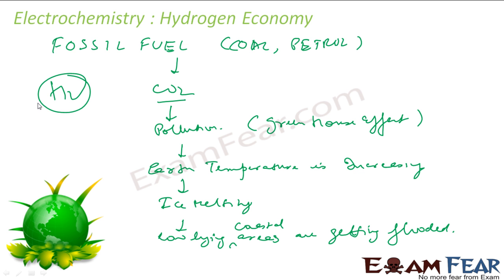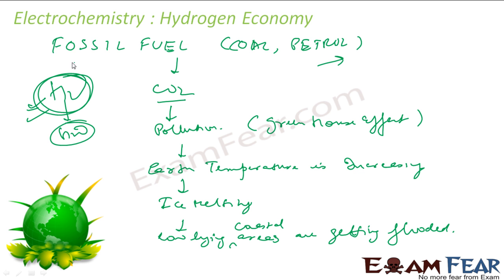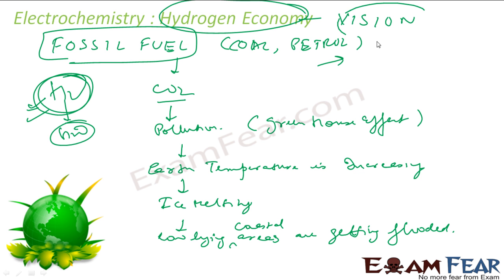The hydrogen fuel cell provides a better alternative, because here the output is only water, which you can actually use. In fact, the fuel cell output of water was used by astronauts in the Apollo spacecraft for drinking. This can be a renewable, non-polluting source of energy. The vision to use more hydrogen gas fuel cells to produce electricity and less fossil fuel, to have a non-polluting earth — that vision is called hydrogen economy.